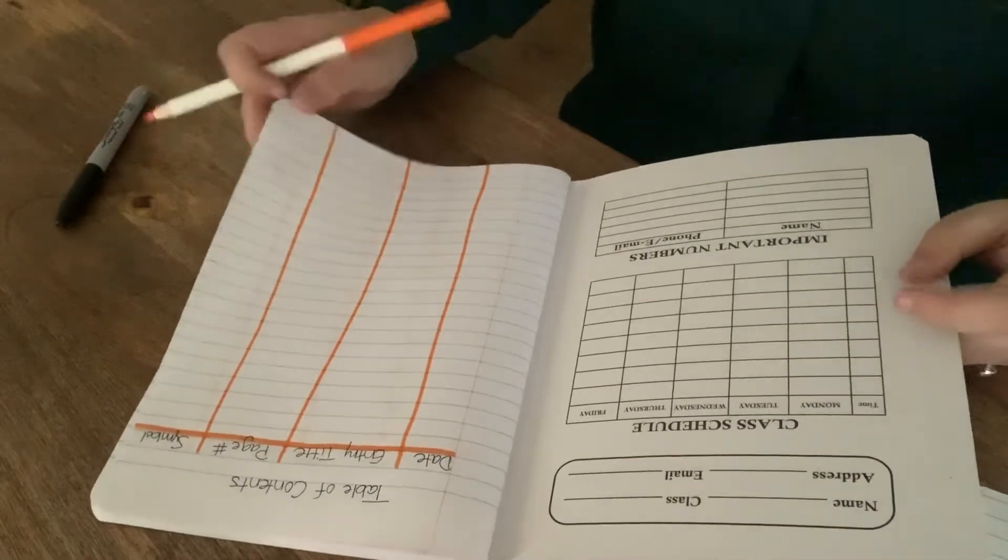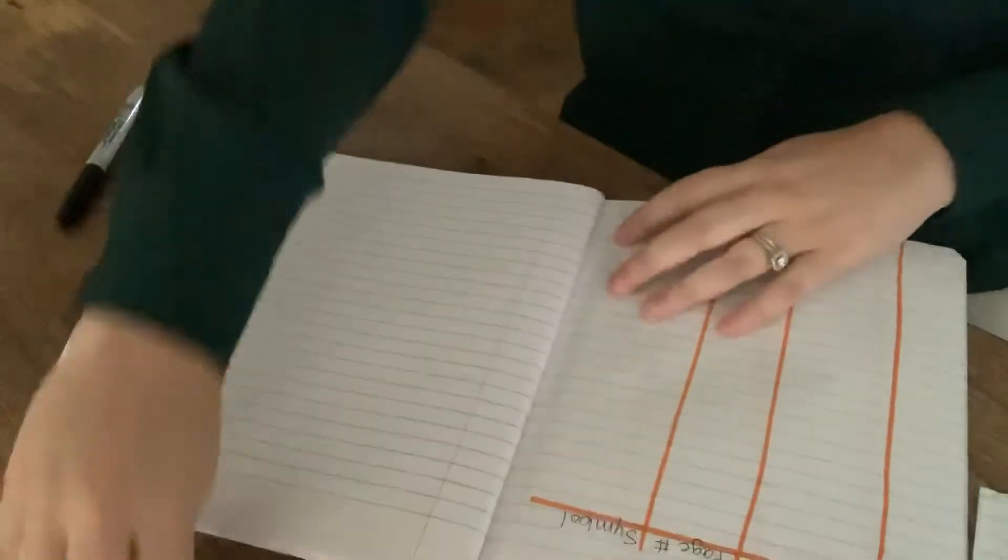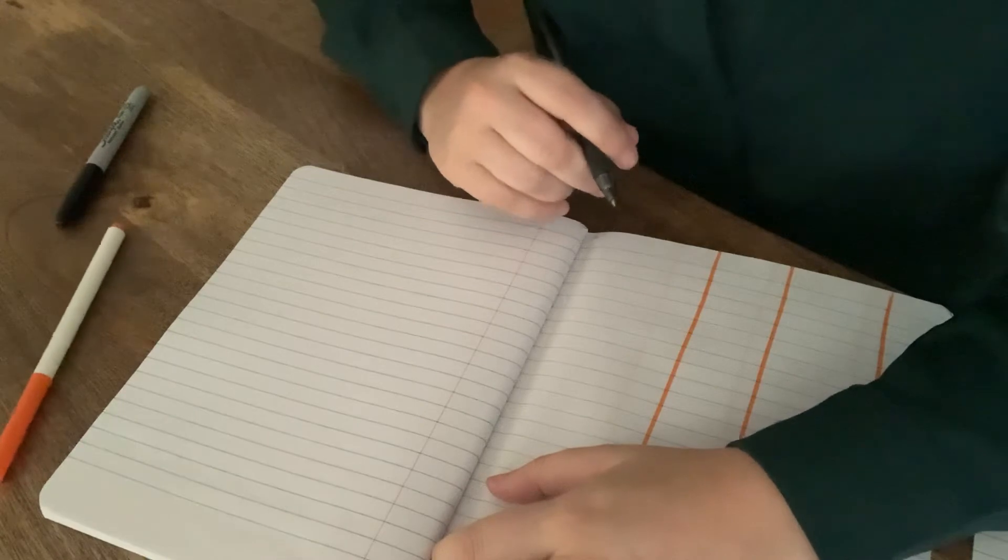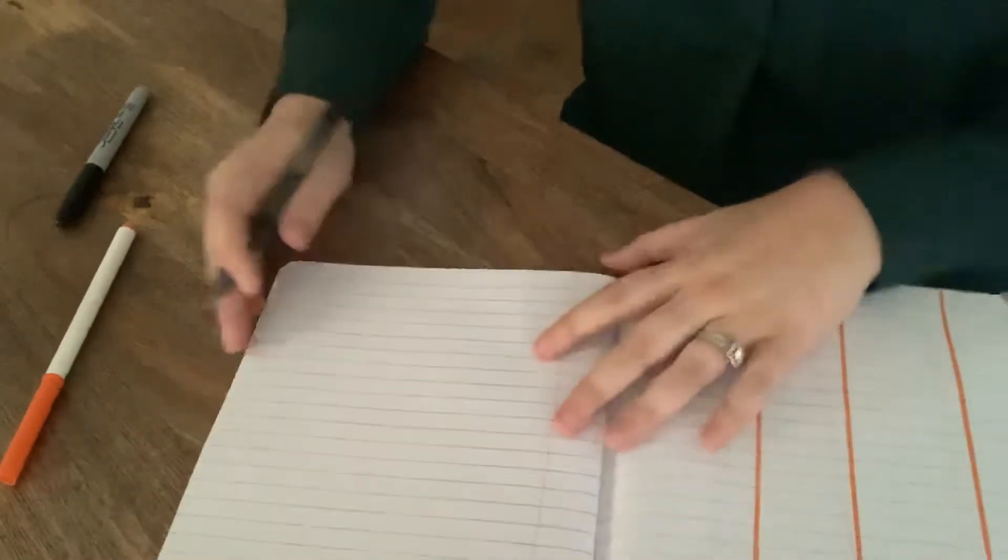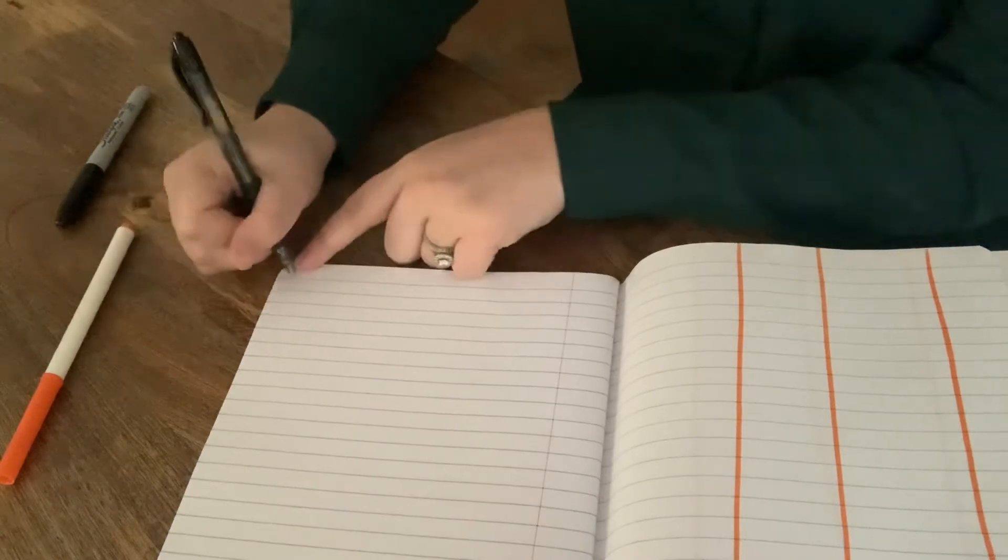Now we need to start numbering our pages. And I would suggest to you that we number up to, let's go to 25. All right, and we're going to do it down here in the bottom corner. One.